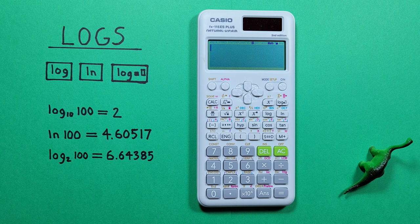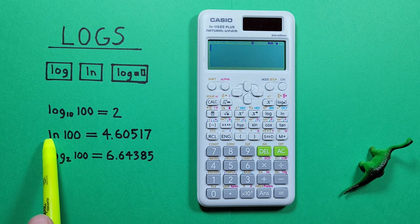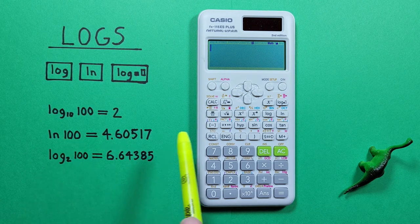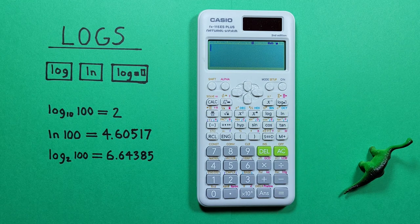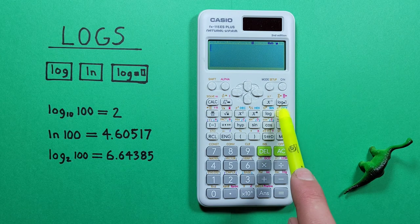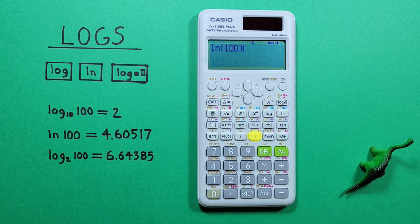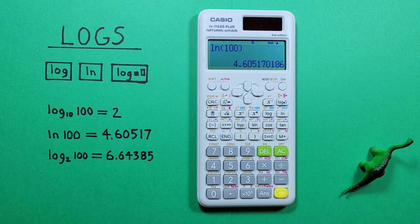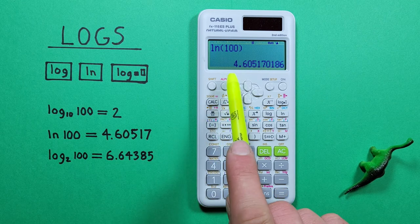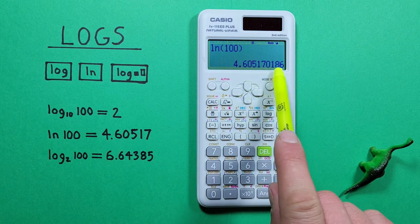If we want to find a natural log like say natural log of 100, we use the ln key. So we get a result of 4.60517, etc.